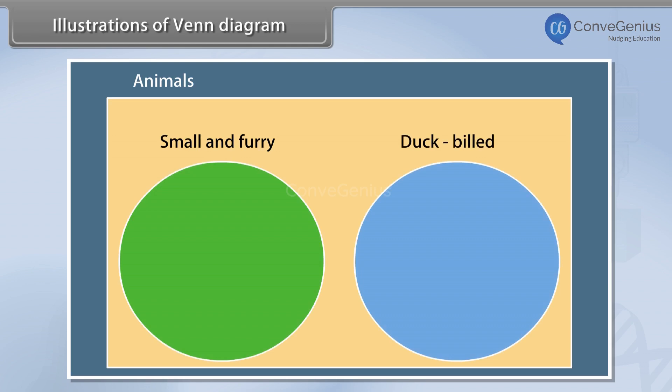Now we'll fill in or populate the diagram. Moles, Rabbit Skunks, and My Cat are all small and furry.